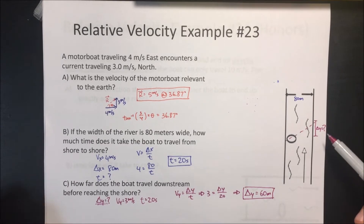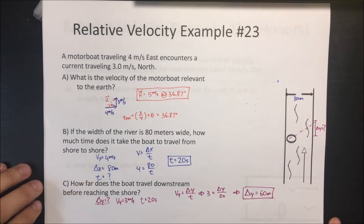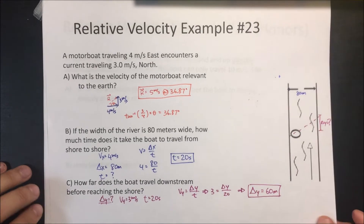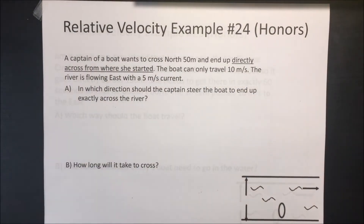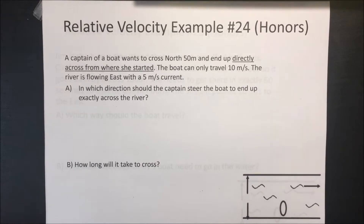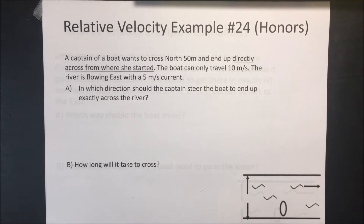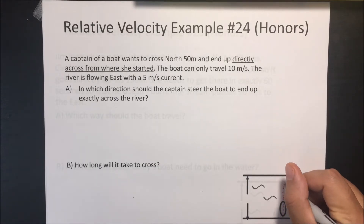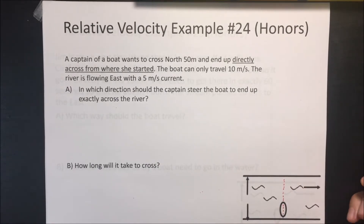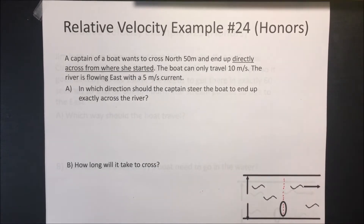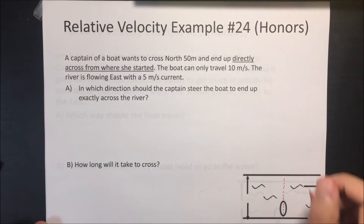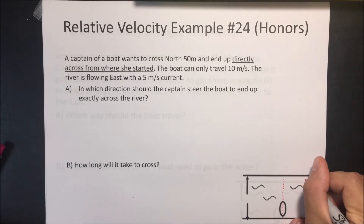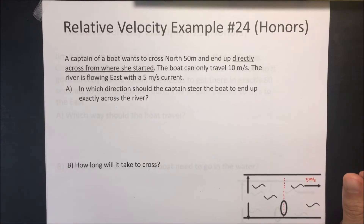Breaking things into components and solving in that component form is the easiest approach. Next problem: a captain wants to cross a river 50 meters wide and end up directly across from where she started. The boat can travel 10 meters per second, and the river flows at a 5 meter per second current to the right.